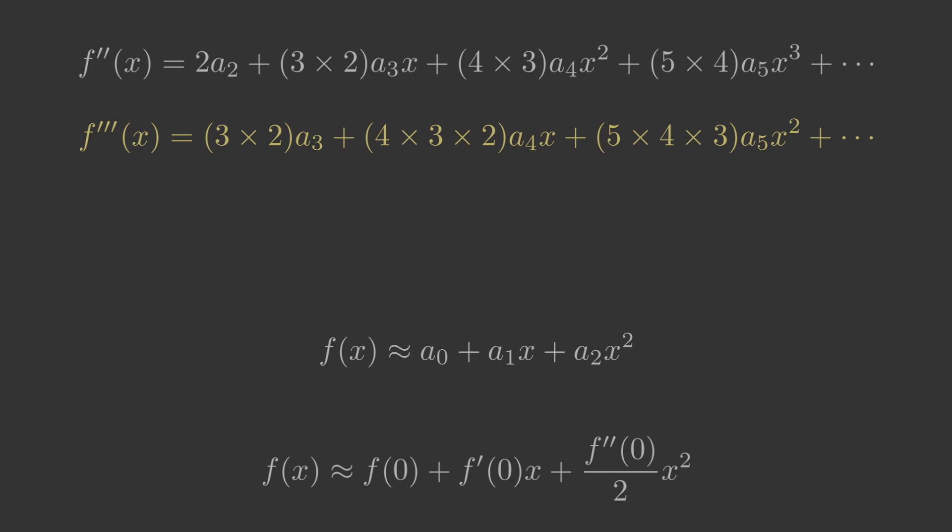Again we set x to 0, and this time we have f3 prime 0 equals 3 times 2a3, so a3 is f3 prime 0 over 3 times 2.